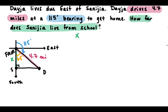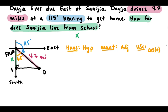Now we're in lesson 6.2, solving for a missing side. For our 65-degree angle, we have the hypotenuse. The side we want, x, would be the adjacent side. So which trig ratio should we use? Cosine — because cosine uses adjacent over hypotenuse.